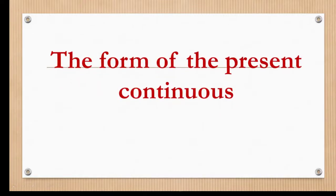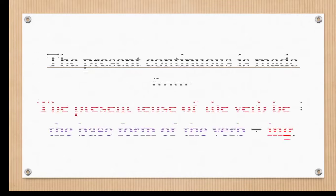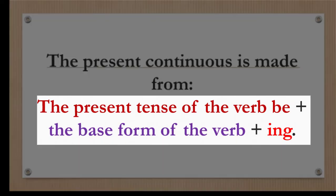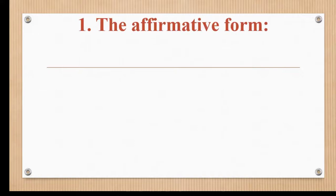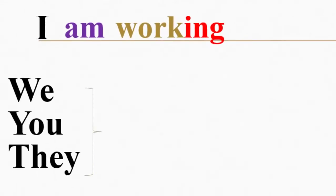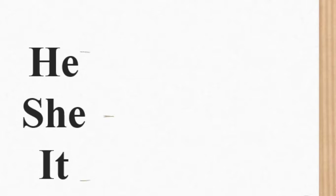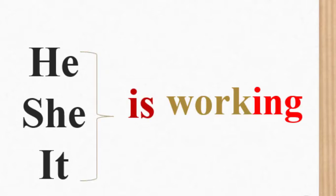The form of the present continuous. The present continuous is made from the present tense of verb to be plus the base form of the verb plus ing. We start with the affirmative form. I am working. We, you, they are working. He, she, it is working.